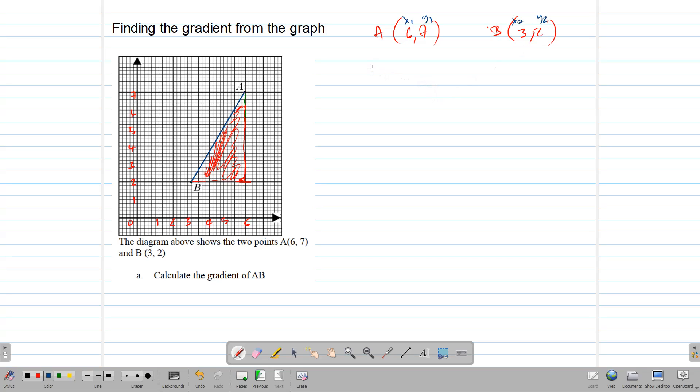And substitute into the formula y2, take away y1, over x2, take away x1. This will give us 2, take away 7, over 3, take away 6. So 2, take away 7, y2, take away y1, 3, take away 6. And this gives us negative 5, over negative 3. And that answer there is positive 5, over 3.